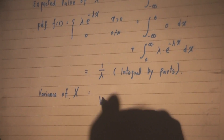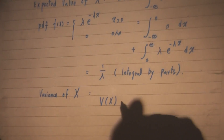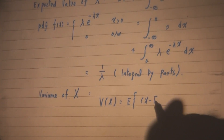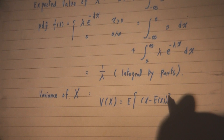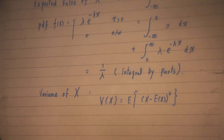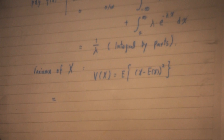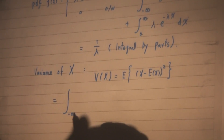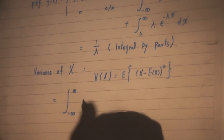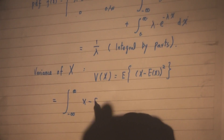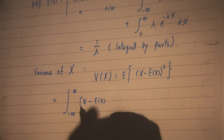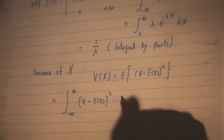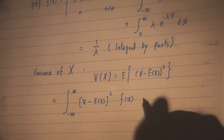Now how about variance of x? Using our notation, variance of x is the expected value of x minus E[x], and you square the term. So applying calculus here, it is the integration from negative infinity to positive infinity of (x minus E[x]) squared times f of x dx.